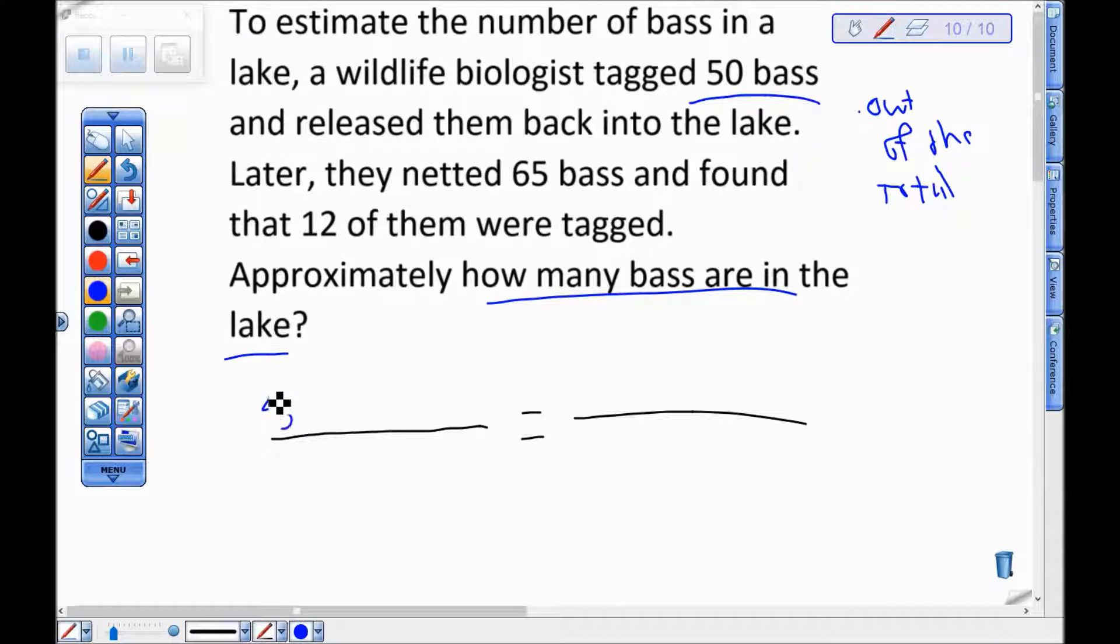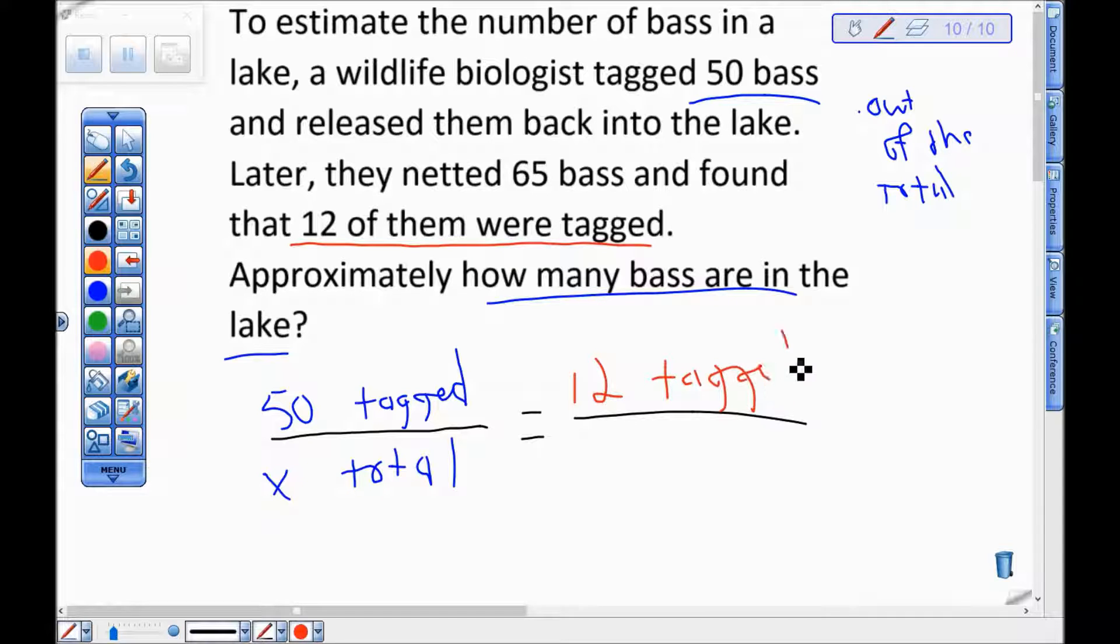So I'm going to do 50 tagged to I don't know how many total. Okay, I take 50 of them to however many there are in the lake. Now my other piece of information is from when I caught them. When I caught them I had 12 that were tagged and I caught 65 total.